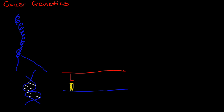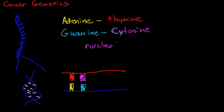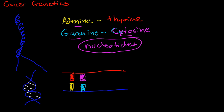And these base pairs are made up of four nucleotides, which just sort of repeat over and over again in the genome. Also a review here: adenine always pairs up with thymine, and guanine always pairs up with cytosine. So we have the four nucleotides — guanine, cytosine, adenine, thymine — and they always fit together in the same pairs.